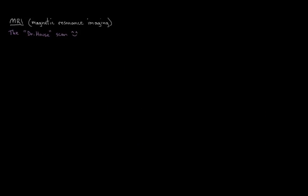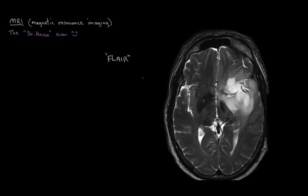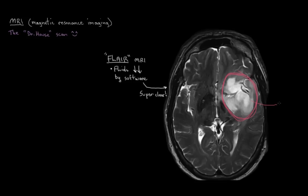The last image is another type of MRI called FLAIR MRI, in which pictures of the brain are taken and then computer software removes any fluid in the brain from showing up in the final image, leaving just a super clear image of just the brain tissue. You can see in this high resolution crisp FLAIR image that there's a lesion — some damage happening in the left half of the brain. So those are some of the more important imaging tests that happen as part of a stroke workup: CT, angiography, and MRI.